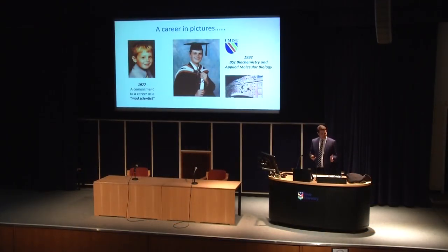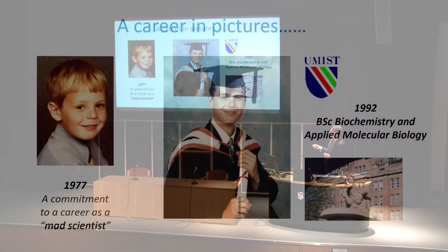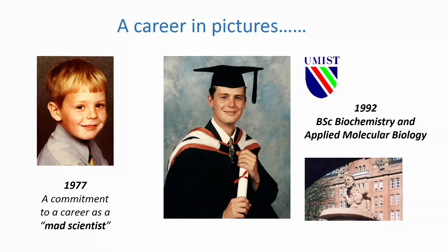One thing that works is pictures. This is me, aged just slightly older than my son Joseph - I'm probably seven years old - and my mum assures me that I was committed to a career in science. In fact, I wanted to be a mad scientist. I'm halfway there, I suspect. This is me in 1992. I went to UMIST - the University of Manchester Institute of Science and Technology. I was fascinated from an early age about how cells worked. I loved biology, chemistry, and physics at school, and particularly the applied part - I wanted to know how to do molecular biology and how to genetically manipulate organisms.